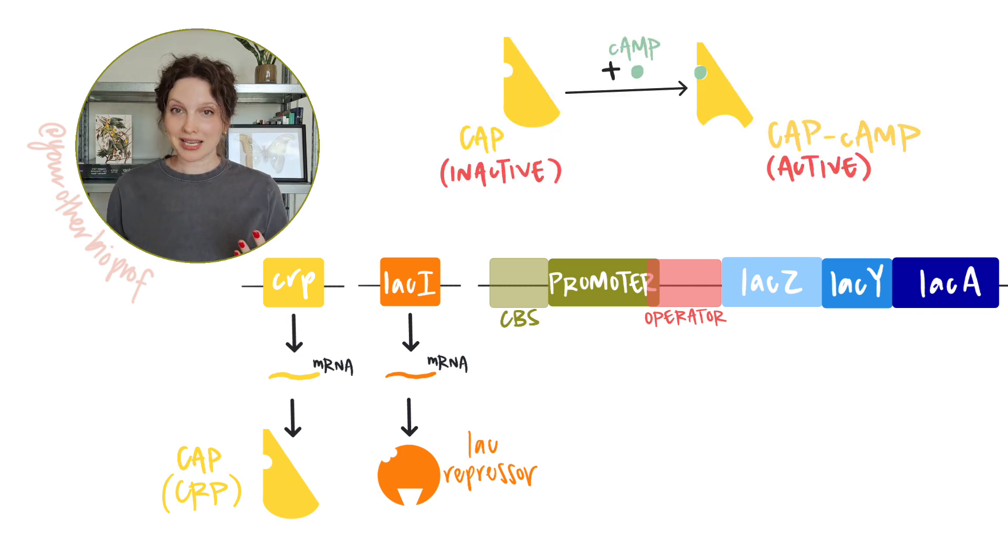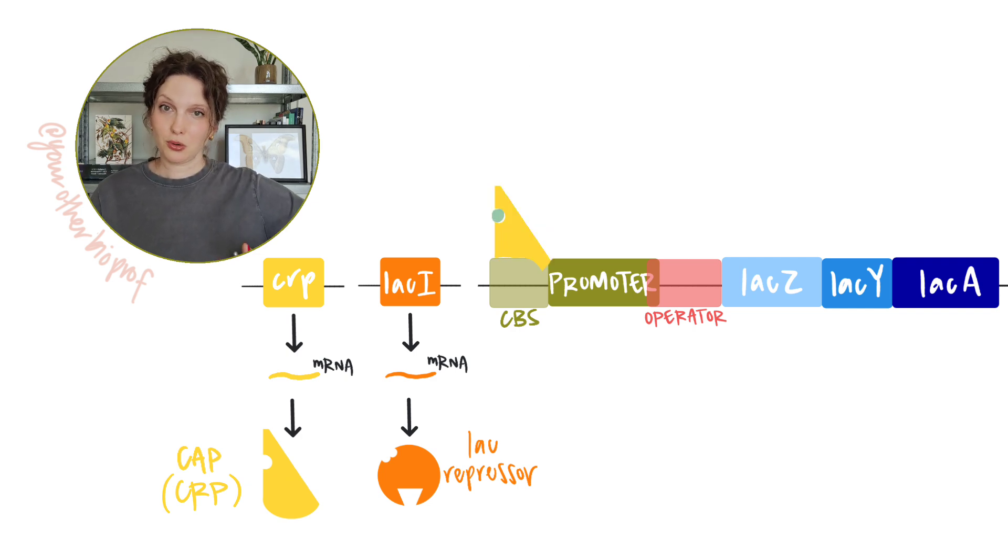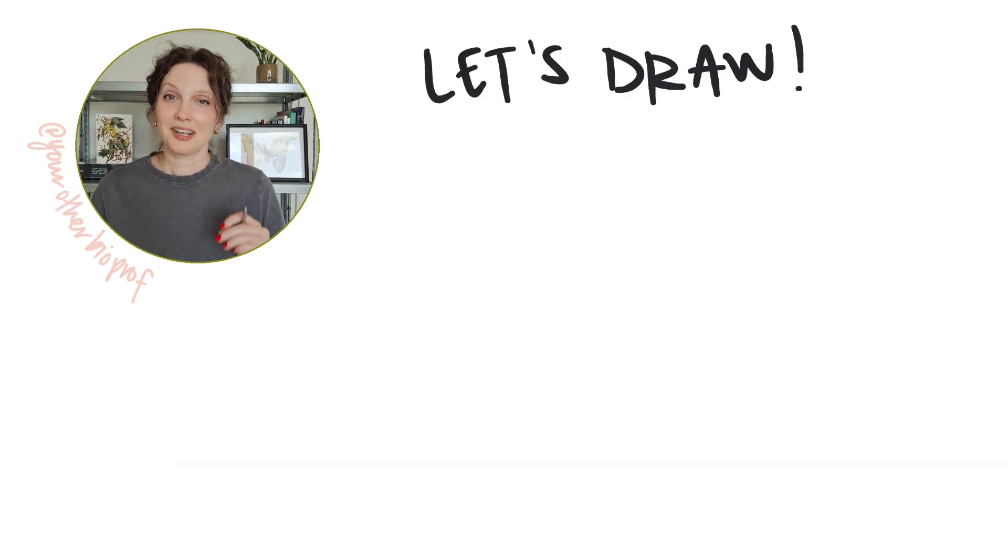So you're going to see how binding of cyclic AMP and CAP is going to activate the CAP protein and CAP is going to then bind to the CAP binding site in order to increase expression from the lac operon. And if that seems like a lot all at once, don't panic.